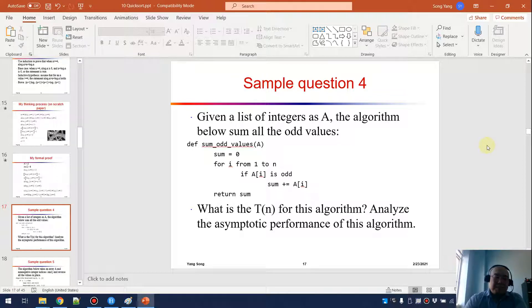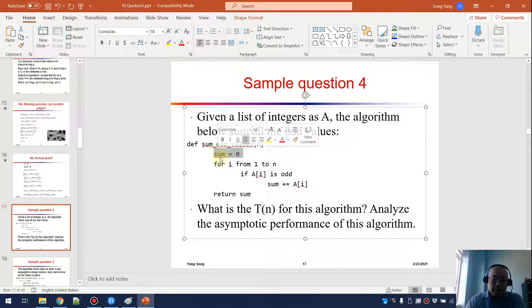As I said before, I don't want to surprise my students. So let's see the first one. For the first question, given a list of integers as A and the algorithm below sums all the odd values. We have a function called sum_odd_values and we take a parameter as A.